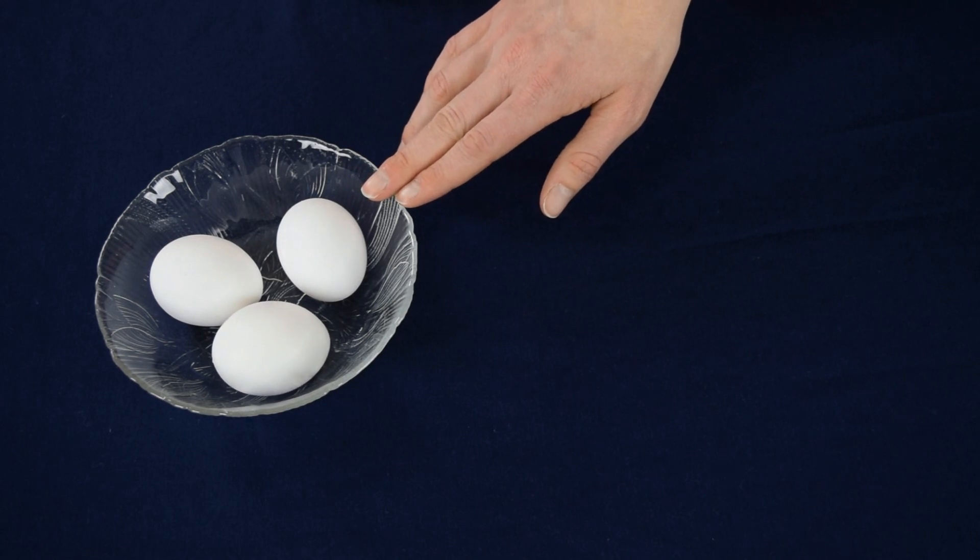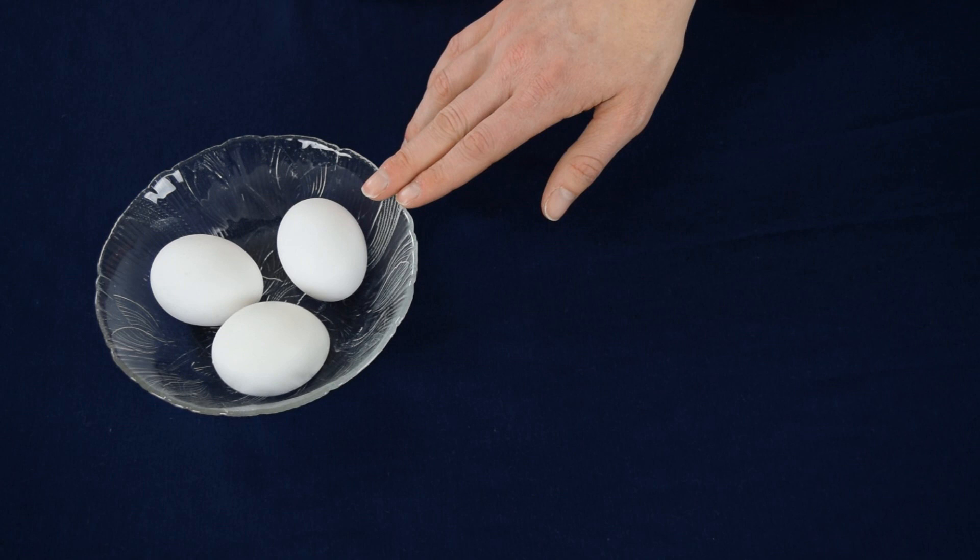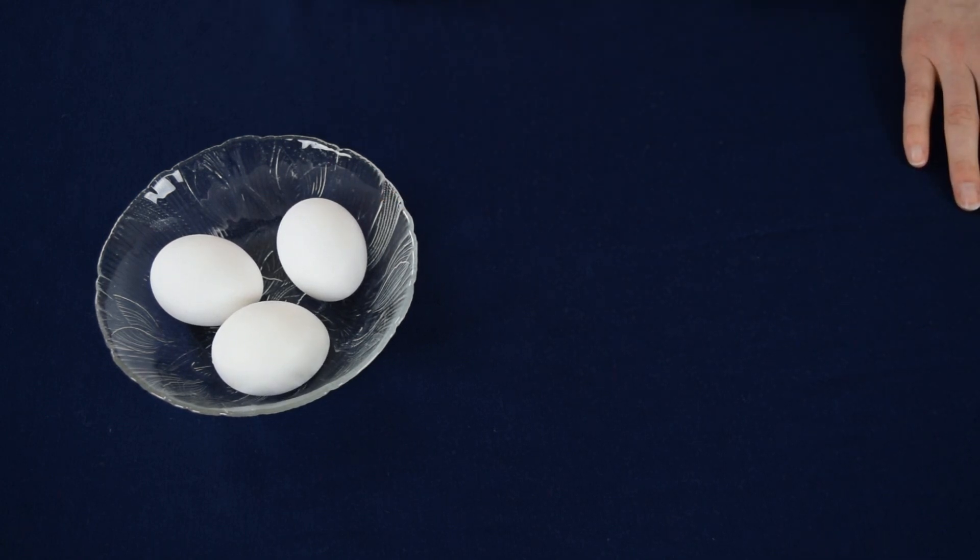As I mentioned, we're starting with a bowl of three eggs. Two of them are raw, and one of them is hard-boiled. We are going to spin the eggs on the table to figure out which one is the hard-boiled egg.